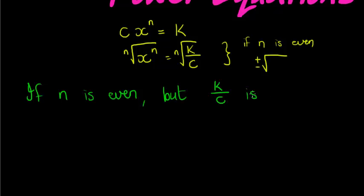...negative. So let me write it like this: k divided by c is smaller than zero, that means it's negative. Then there is no real solution.